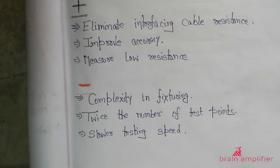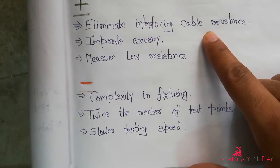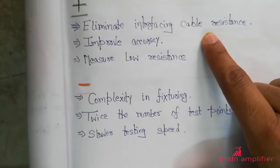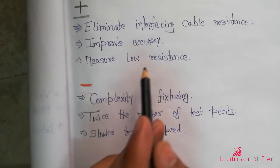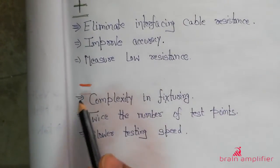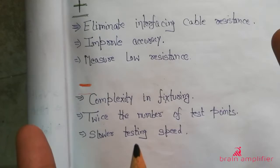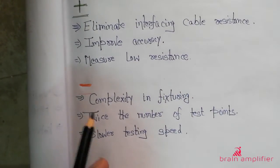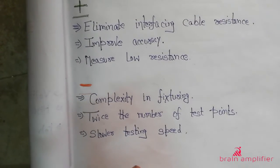There are some pros and cons to this method. The benefits: it eliminates interfacing cable resistance, improves accuracy by removing that resistance, and it can measure very low resistance values. The negative points: in the two-wire method you just put the multimeter leads on the resistance. But here you have twice the number of test points — you have to put four clamps across the resistance — so it takes more time, testing speed is slower, and there are added complexities.